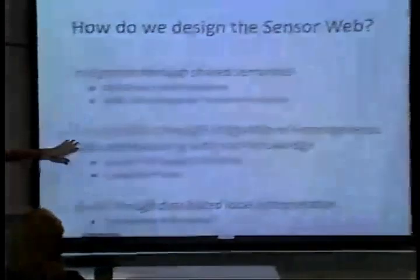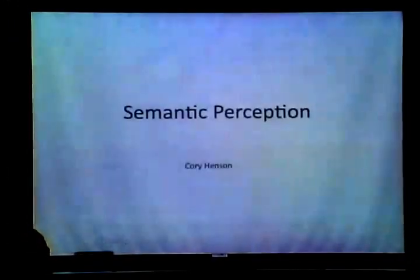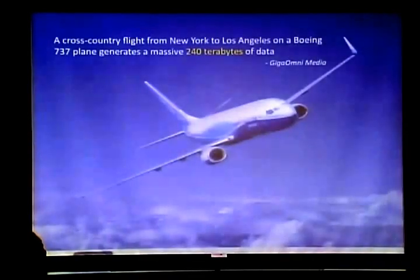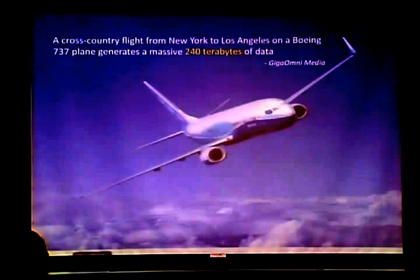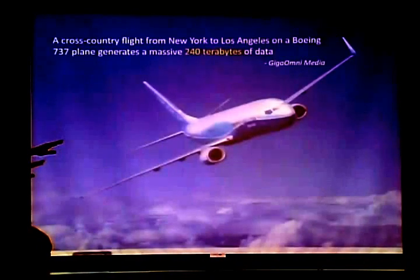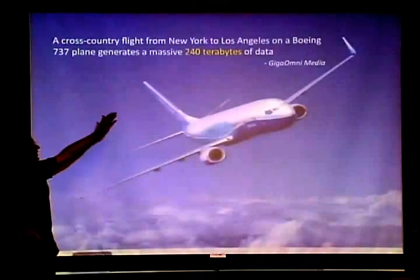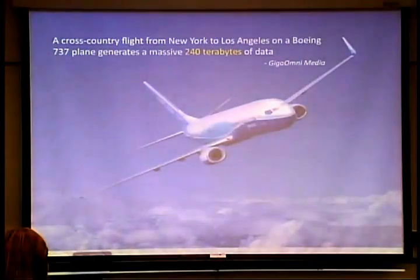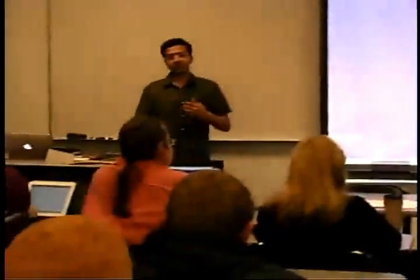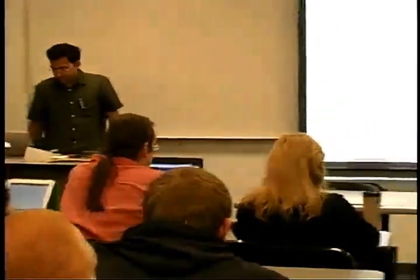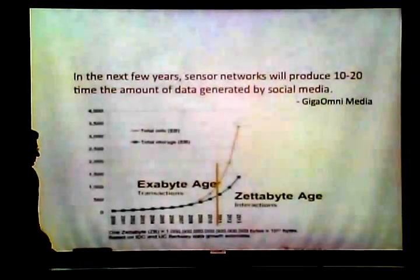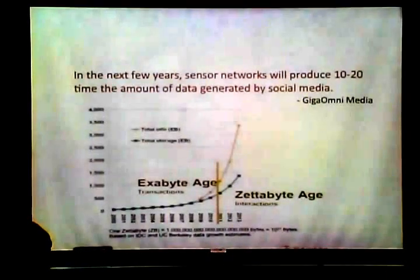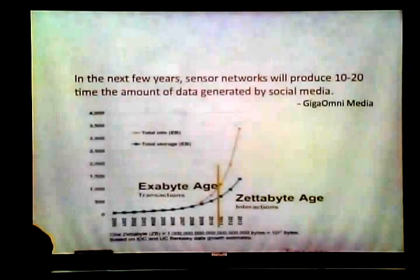To stress the point further: just one cross-country flight on a 737 plane generates 240 terabytes of data from different sensors monitoring different parameters — engine, airflow, fuel, and so on. As mentioned, we don't have a place to store all this data — it has surpassed our storage capacity. So we have to be smarter in processing at this kind of scale.